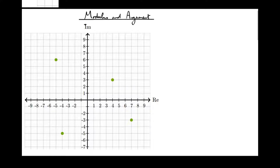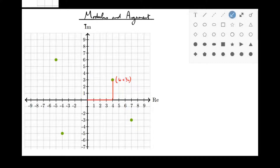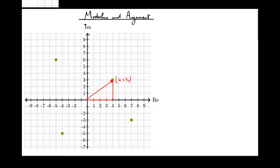So let's take, for example, this complex number here, which is 4 plus 3i. This particular number is a distance of 4 horizontally from the origin and 3 vertically from the origin. So the distance from the origin can be easily calculated using Pythagoras' theorem. This length here is 4, and this length here is 3.